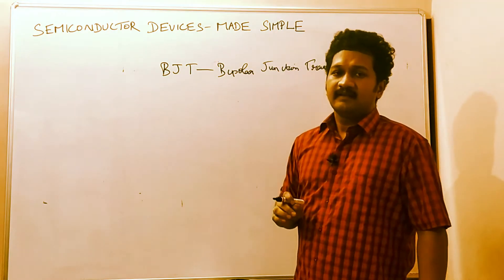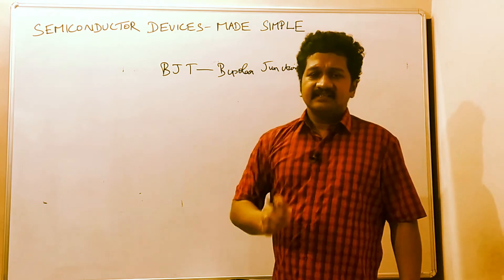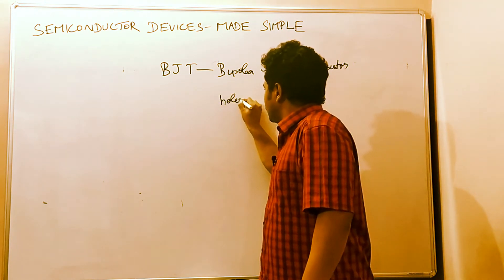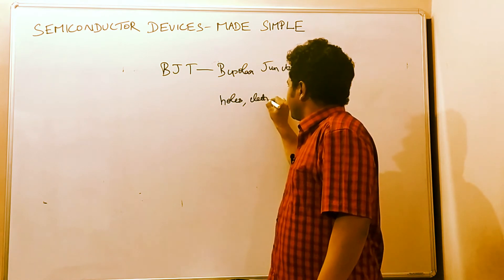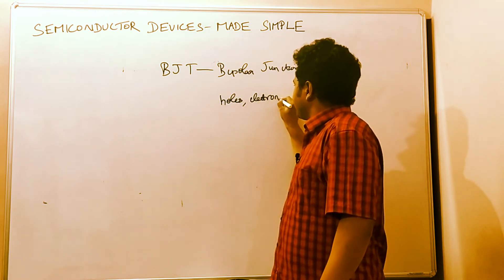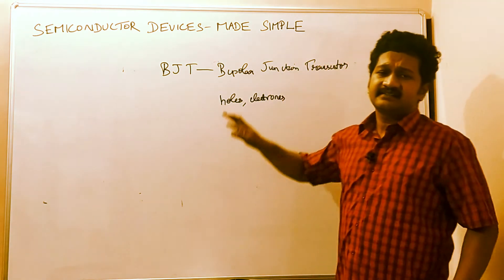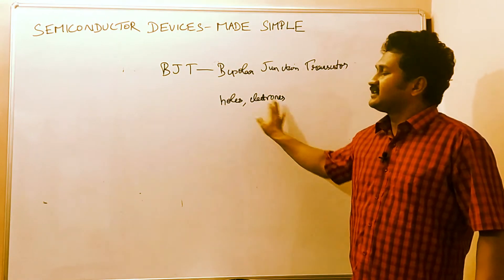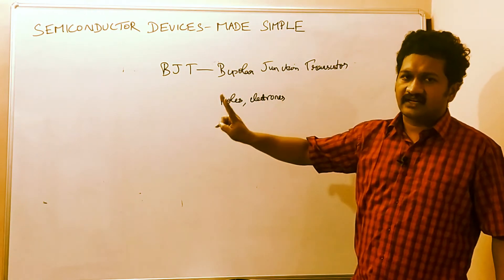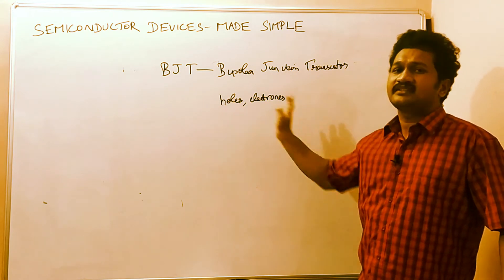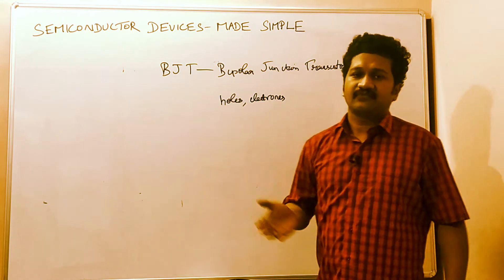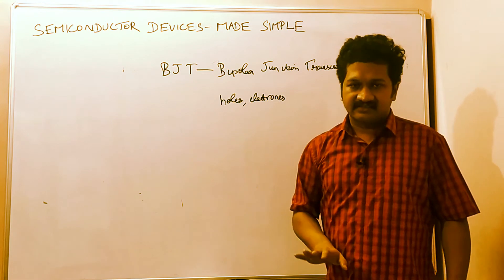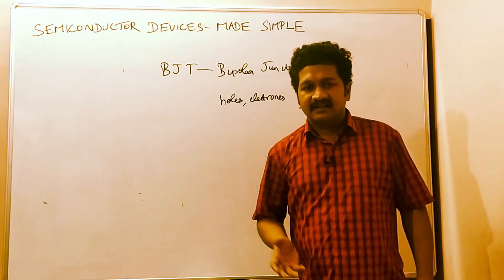What is meant by bipolar? It consists of two charge carriers — holes and electrons. When there is involvement of both charge carriers in the production of current, then it is called a Bipolar Junction Transistor. There are also unijunction transistors — one classification of transistor is FET.